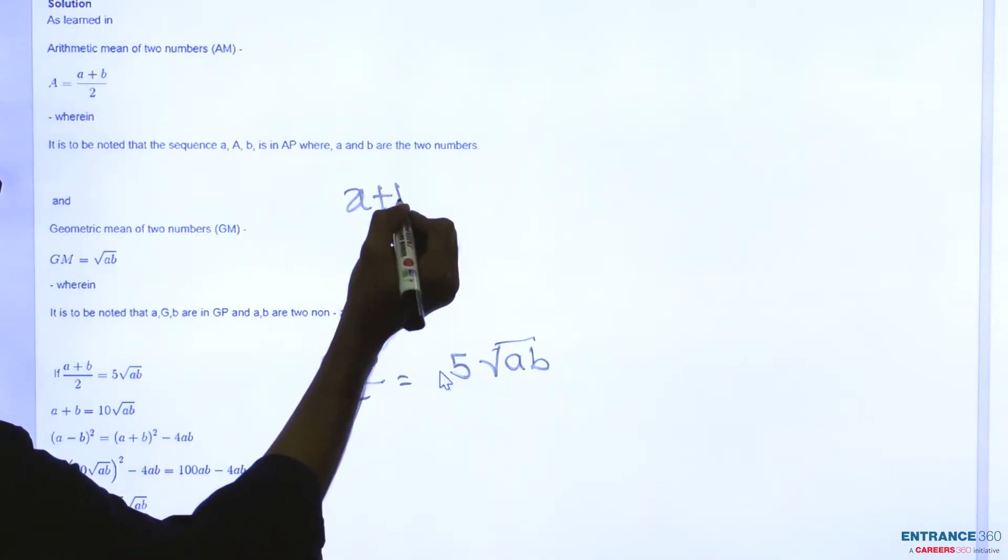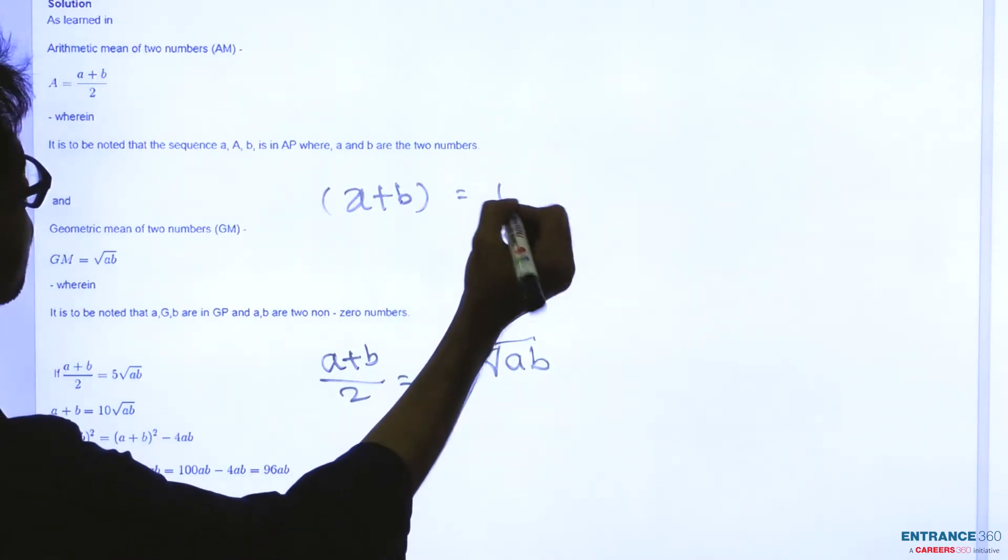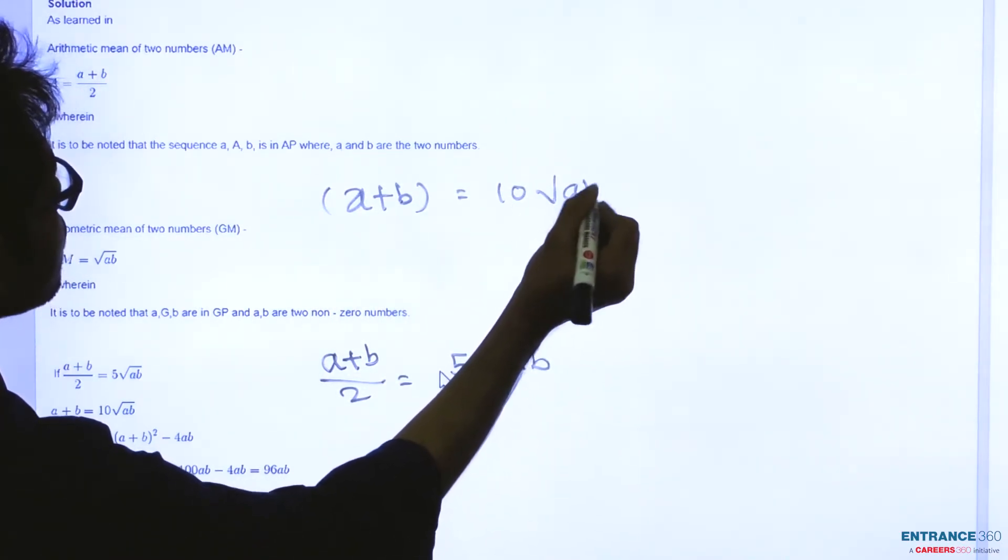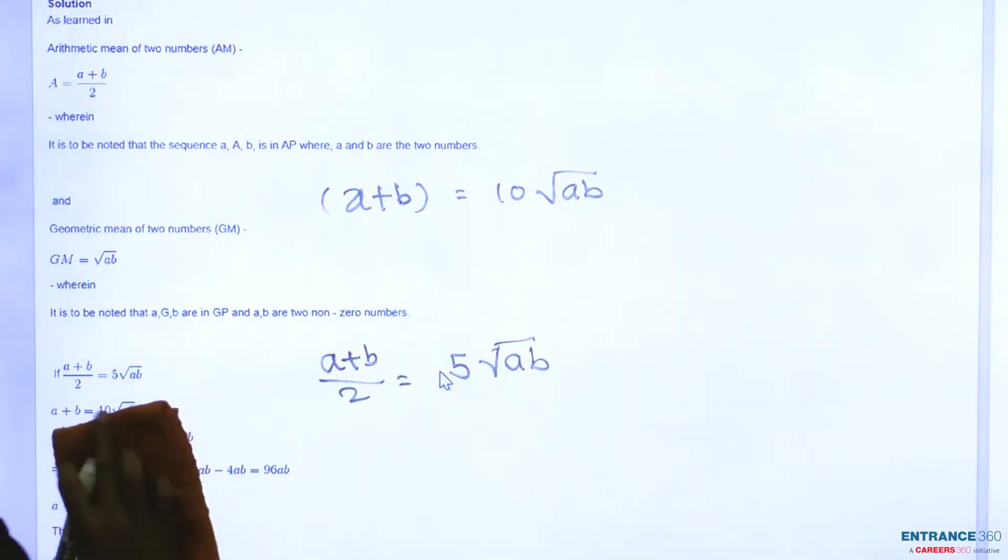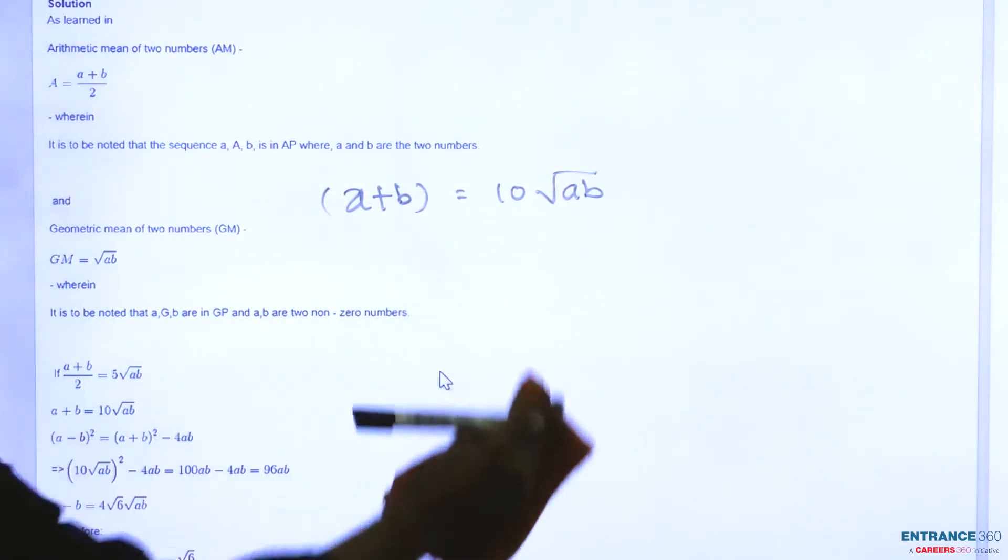This is also equal to A+B = 10√(AB). Now this is given.